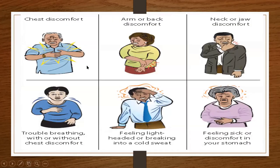Here's another illustration of symptoms a person having an MI may experience: radiation to the arm and back, or the neck and jaw, feeling sick to the stomach, feeling lightheaded, breaking into a cold sweat, trouble breathing with or without chest discomfort. We'll see later that there are differences in symptom experience between men and women.